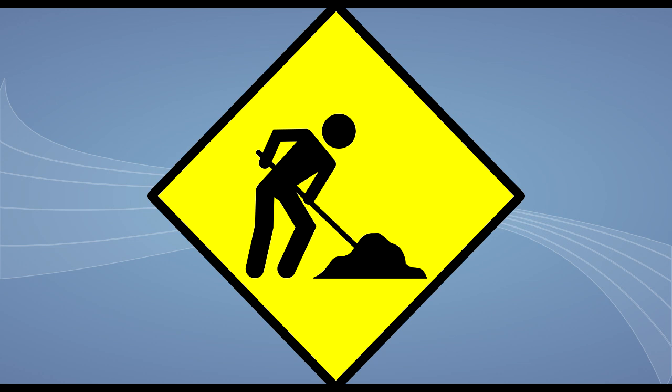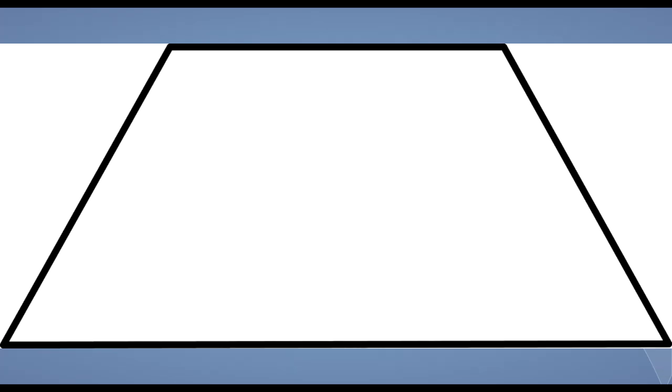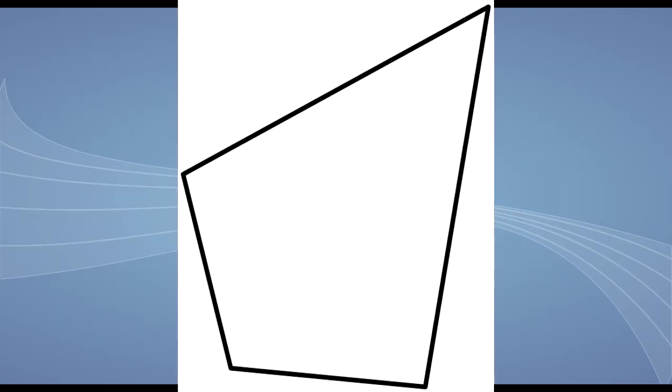Some quadrilaterals are parallelograms, some aren't. If a shape has four straight sides and both pairs of sides are parallel, that shape is a parallelogram. If a quadrilateral has only one pair of parallel lines or no parallel lines, it is not a parallelogram.